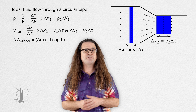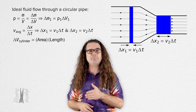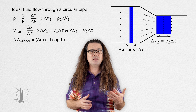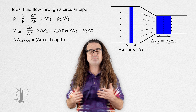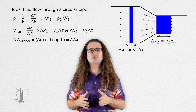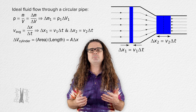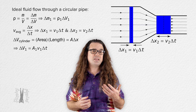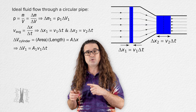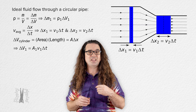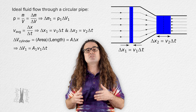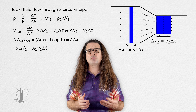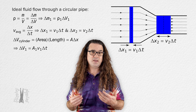The volume of the mass flowing through the pipe in time delta t equals the cross-sectional area of that mass times delta x. Substituting in our equation for the displacement of the fluid through plane 1, we get that delta V sub 1 equals the cross-sectional area of plane 1 times the velocity through plane 1 times change in time.